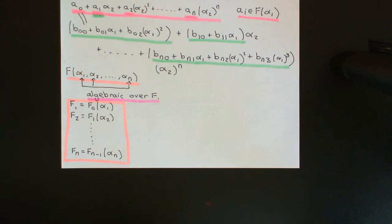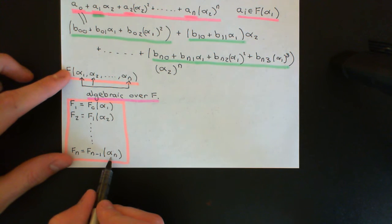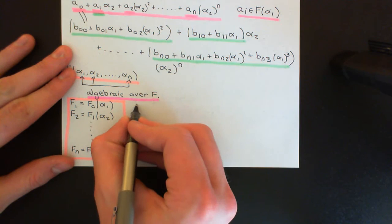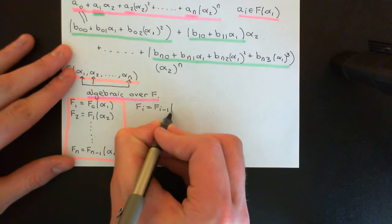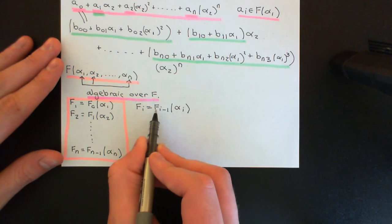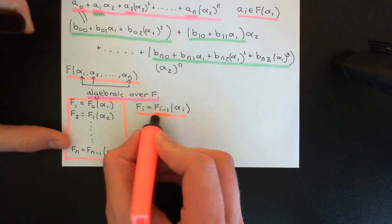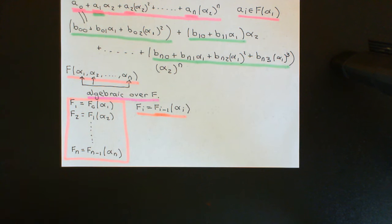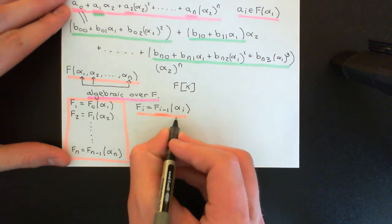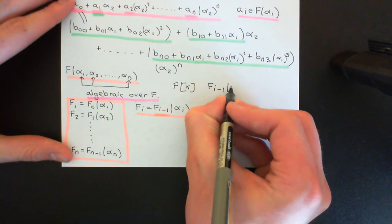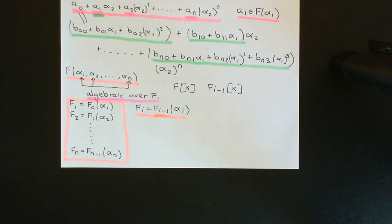And of course the answer is yes. Indeed this generalizes: α₁, α₂, all the way down to αₙ, they're all going to be algebraic over the field that we're trying to use them to generate a field extension of. More generally, writing Fᵢ = Fᵢ₋₁(αᵢ), αᵢ is always algebraic over Fᵢ₋₁. The reason is that all of the Fᵢ₋₁'s are field extensions of F. If αᵢ is algebraic over F, then there is some polynomial over F that vanishes at αᵢ, and that polynomial will still be in the polynomial ring over Fᵢ₋₁, and will still vanish at αᵢ.